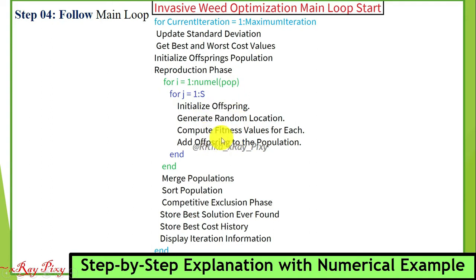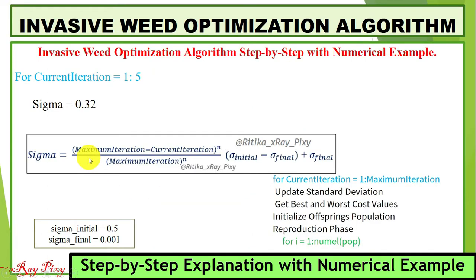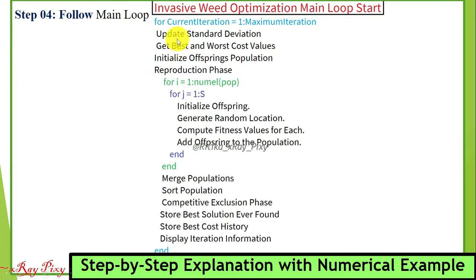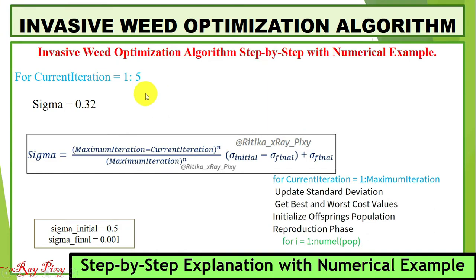Inside this loop, we initialize the population reproduction phase. The steps are: generate random locations, compute fitness values, merge population, sort, and find the best solution. To update standard deviation, maximum iterations = 5. We compute the value for sigma using the maximum iterations and current iteration (iteration = 1), with initial and final values, and we get sigma = 0.32.